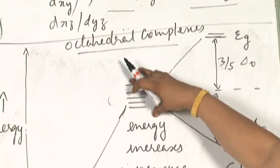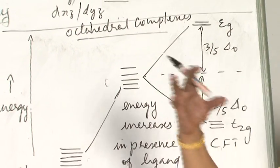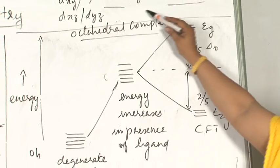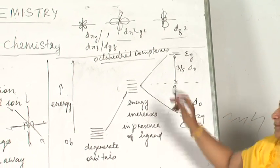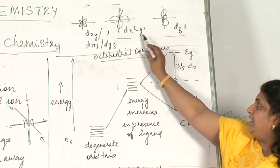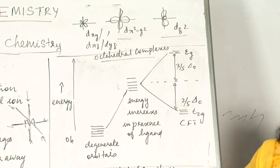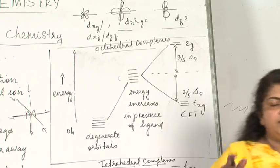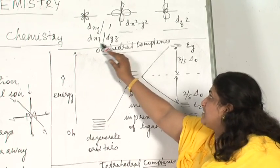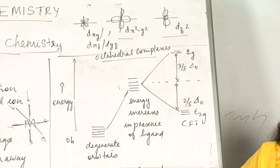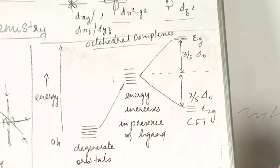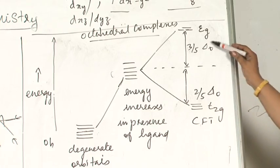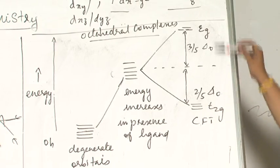All the orbitals' energy will be lifted as the ligands come closer. These orbitals face more repulsion, so their energy will be lifted compared to the average energy. These orbitals x y, x z, and y z face less repulsions, so their energy will be reduced compared to the average energy. This Δo denotes octahedral splitting.